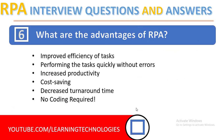Next question: what are the advantages of Robotic Process Automation? The benefits of RPA include: Improved Efficiency of Tasks, Performing Tasks Quickly Without Errors, Increased Productivity, Cost Saving, Decreased Turnaround Time, and No Coding Required. Since RPA can automate almost all manual and repetitive tasks, you can reduce the size of your workforce and hence reduce the cost. Humans make mistakes, but computers or machines don't commit mistakes — they do exactly as they are told, and hence are more accurate.